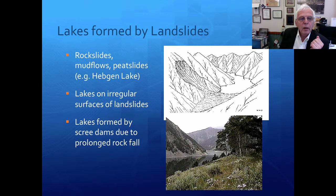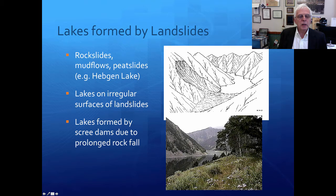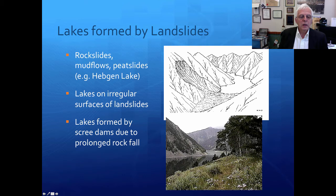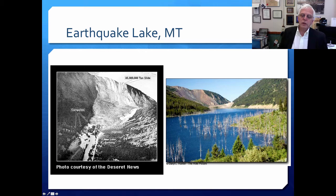Lakes can also be formed by landslides, including rock slides, mud flows, and peat slides. A fairly well-known example is Hebgen Lake in the Yellowstone area of the United States. Lakes can form on the irregular surfaces of landslides, and also by scree dams due to prolonged rock fall into valleys causing water to back up. Here you see photographs of Earthquake Lake in Montana — a great tragedy where an earthquake caused a large landslide.